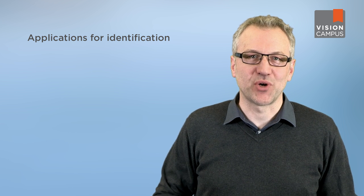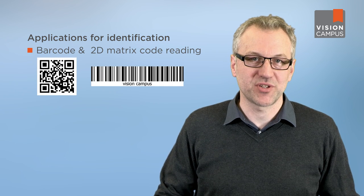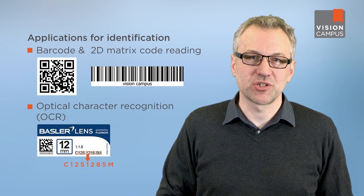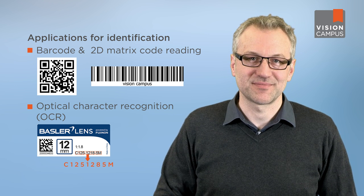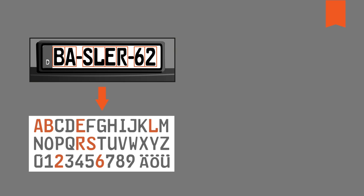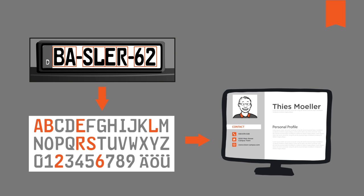Typical applications for identification are barcode and 2D matrix code reading, or optical character recognition, also called OCR. One way to manage OCR is by separating the characters in the image and comparing them with a set of templates. Afterwards, the software can convert the captured data into editable and searchable data.